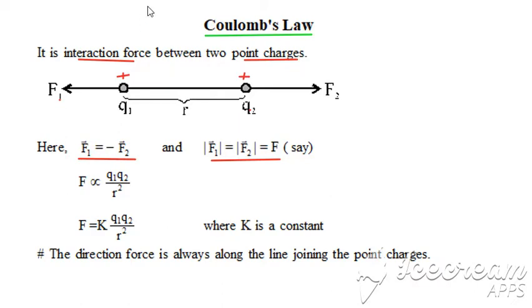We can write F₁ vector equals minus F₂ vector. As per Coulomb, this force F, which is the magnitude of either force, depends on individual charge magnitude directly. It's proportional to Q₁ and also directly proportional to Q₂. If the separation between these two point charges is smaller, then this force is proportional to 1 upon R square. That's called inverse square law.